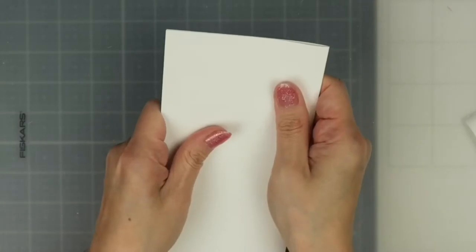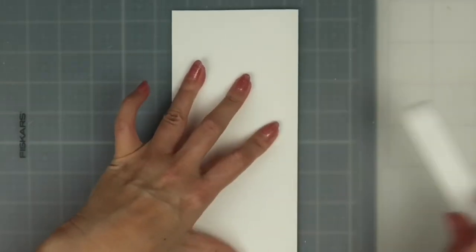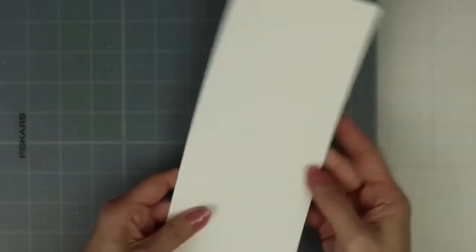Now we'll go ahead and fold and burnish on our score line. I'm using my Teflon bone folder to get a really sharp crease. And that's it. This measures three and seven eighths by eight and seven eighths.